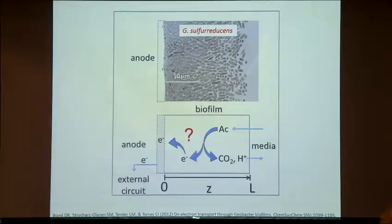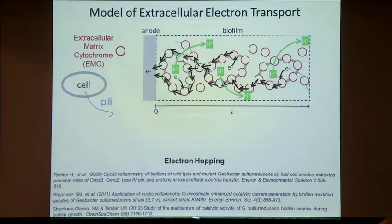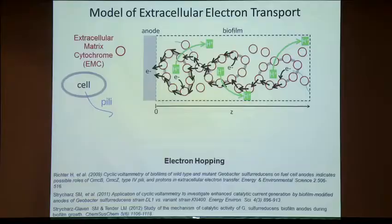The model we put forth for the electron transport process is a simple model known as electron hopping. I'm showing it schematically in a cross-section where I have cells shown here by gray ovals. The cells are decorated with what I'll call an electron transfer mediator, a redox mediator, or an extracellular cytochrome — I'll use those terms interchangeably. There's a lot of evidence supporting that they are extracellular matrix cytochromes, but these are complicated systems and nobody knows for sure.